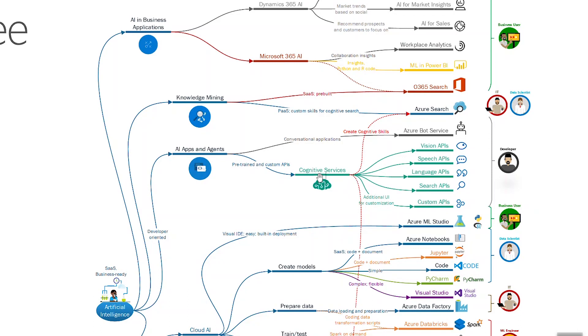These Cognitive Services APIs can be used in Azure Search as cognitive skills to create a set of different ways of enriching the data.